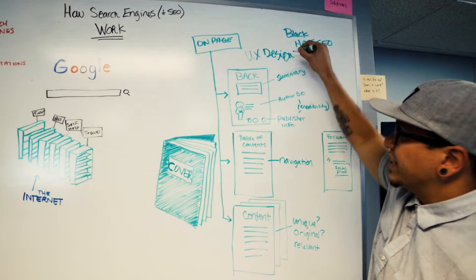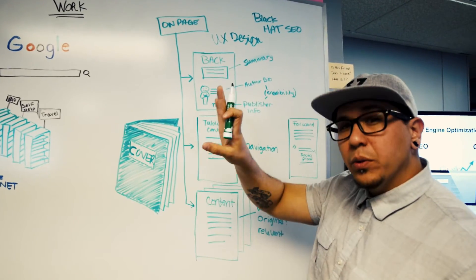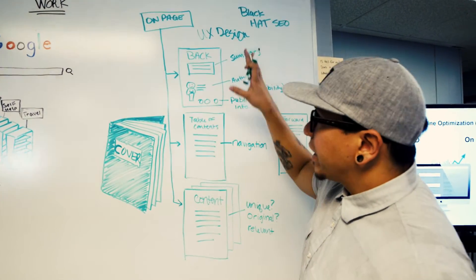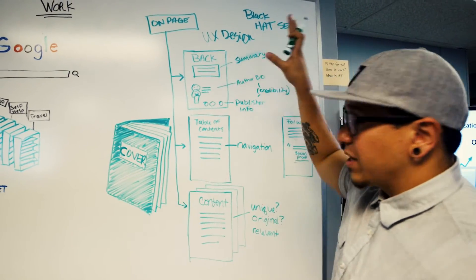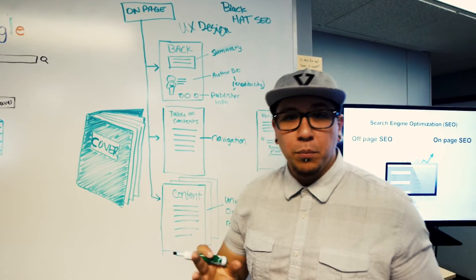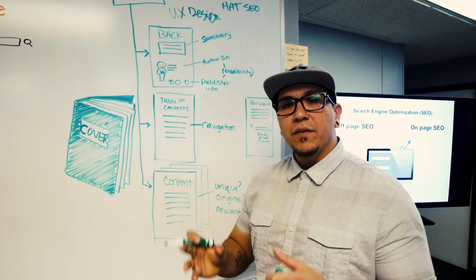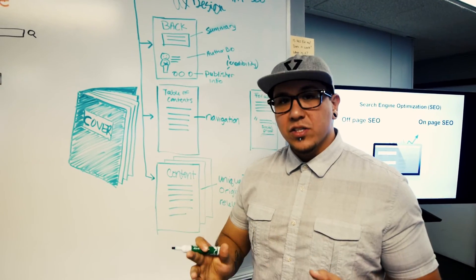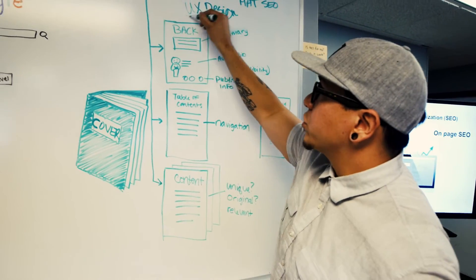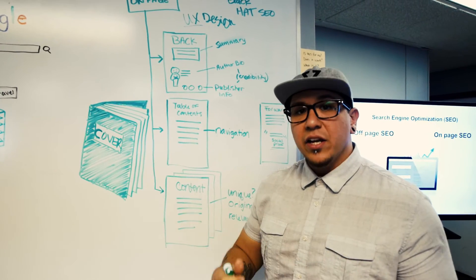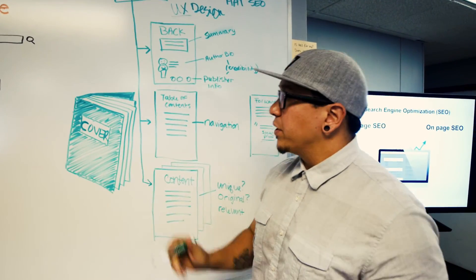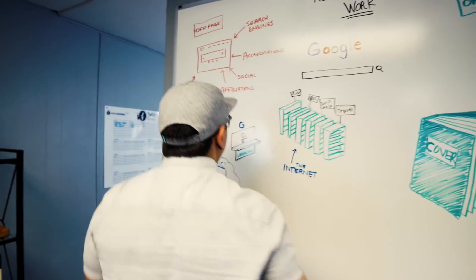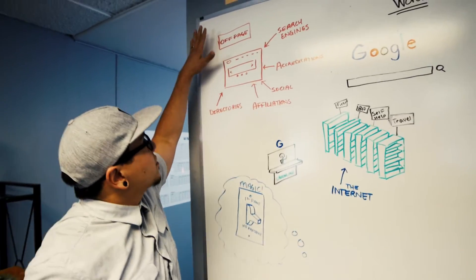We'll do another video another day on how to do UX design, but for right now we'll just leave it at this: design your website first for people. Don't think what do I have to do to my website or what company can I pay to get seen higher on Google. It doesn't work like that. They're interested in the user's experience, so design your website for the user's experience. This is all on-page SEO.